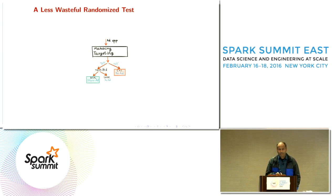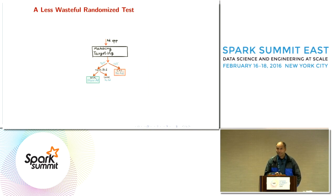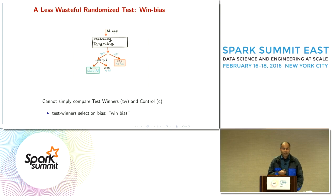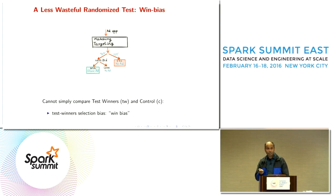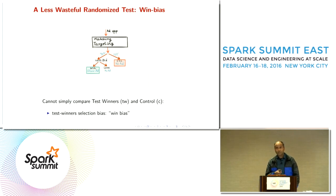We can design a less wasteful randomized test. Instead of waiting to win the auction and then assigning to test or control, we assign to test or control right after matching and targeting. If the user is assigned to test, we submit the bid; winners see the ad and losers do not. But there's a new problem: there's a bias between test winners and the control population. We might win precisely those users who are highly responsive, meaning test winners are statistically not equivalent to the control population, so we cannot meaningfully compute lift.